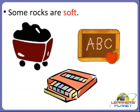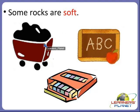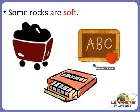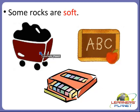We studied about hard rocks, but remember that some rocks are soft also. For example, coal, slate, and chalk. The roofs of some houses are made up of slate, and chalk pieces are also made from this soft rock. So we can see here some examples of soft rocks: coal, slate and chalk.